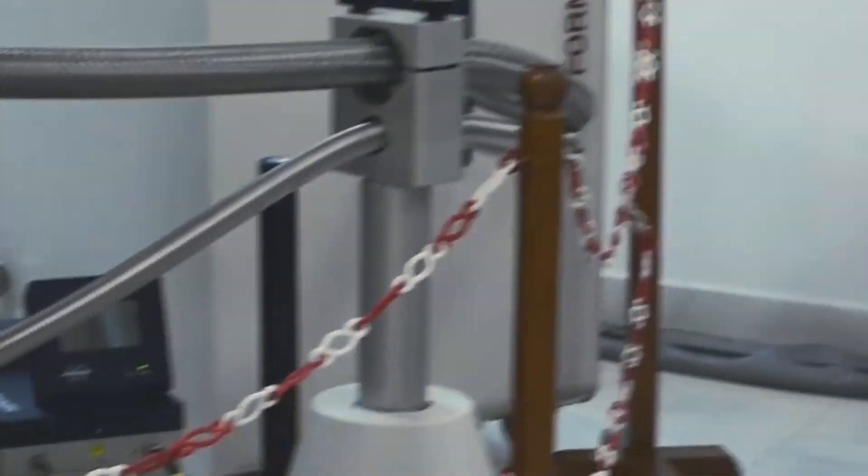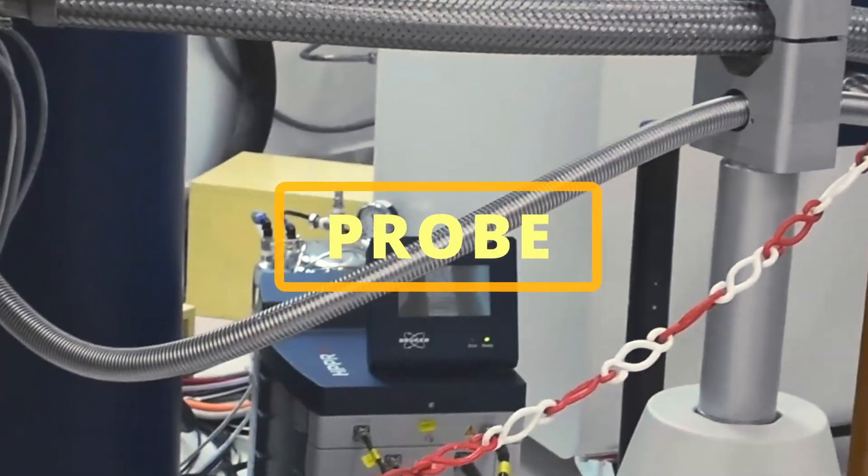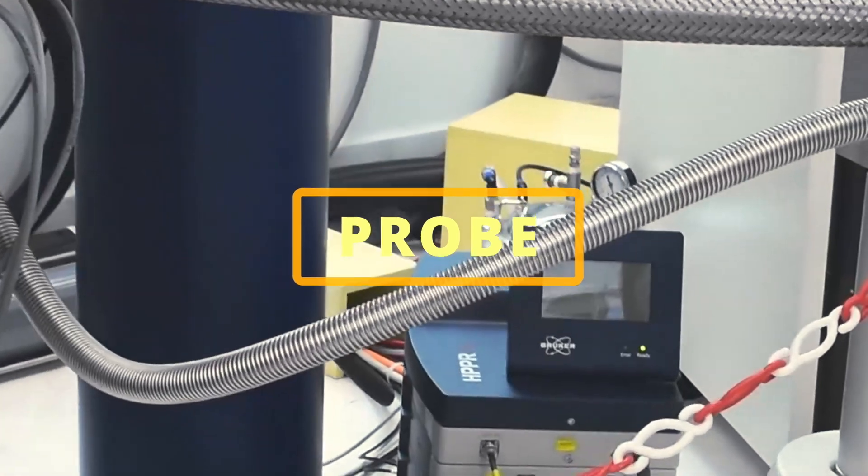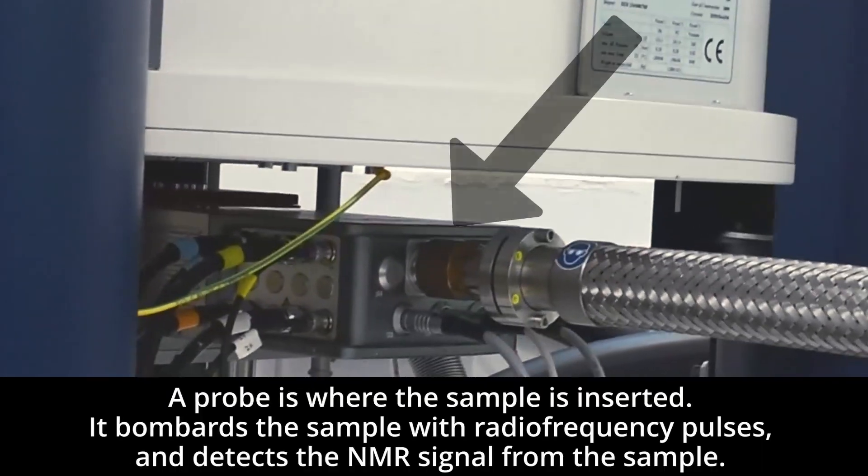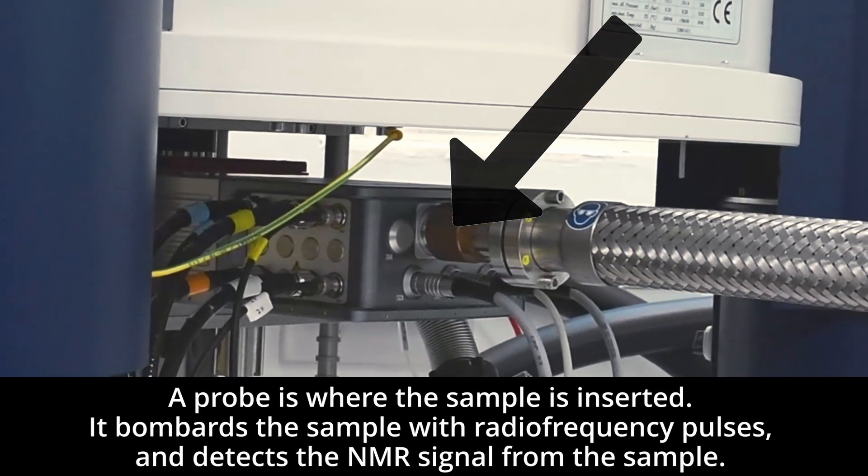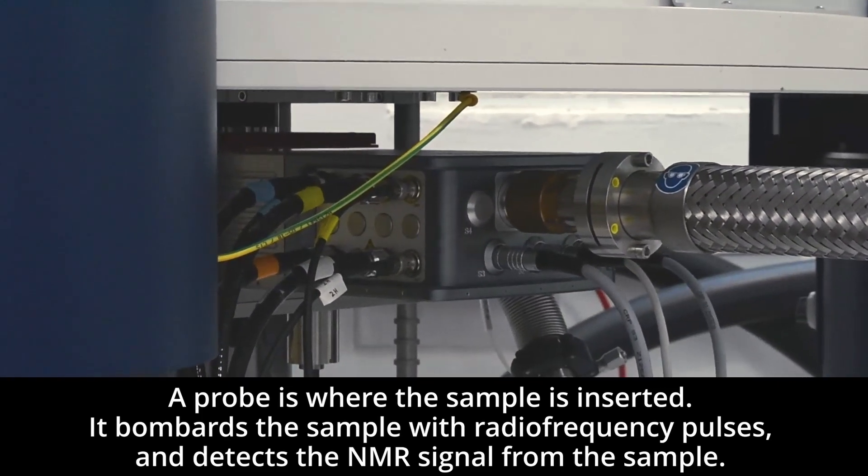Here at this stage, you can see from below in the same barrel, we have put up something called as a probe. This probe is also very unique for this setup. We call it as a cryogenically cooled probe. The probe also has electronics that is kept at 17 Kelvin.